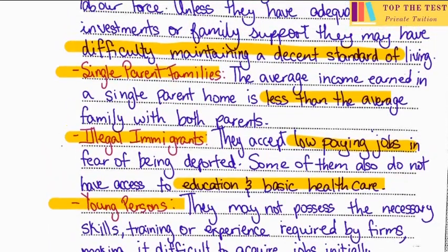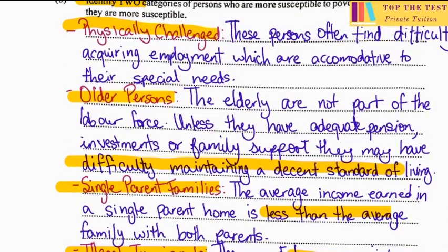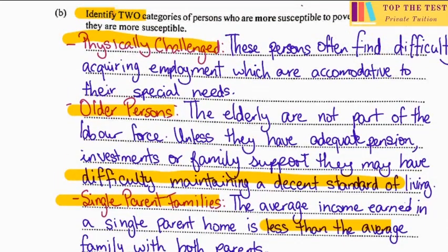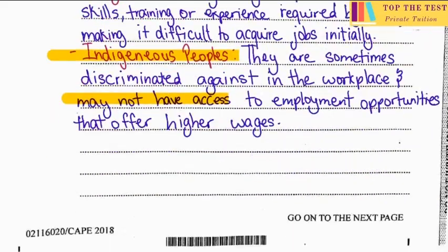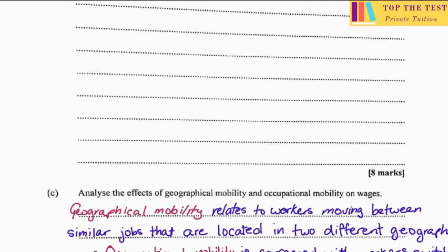You are required to choose two of these, identify them, and explain thoroughly for four marks each. You have about a page and a half to write, so really take two of the points and expand upon them.